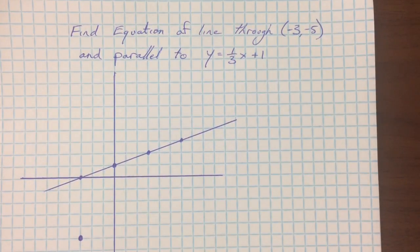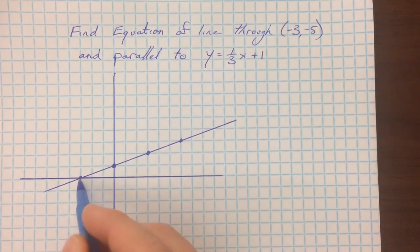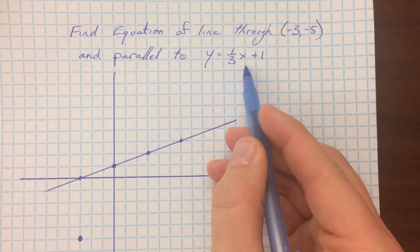For the next one, we want to find the equation of a line that goes through this point, negative 3, negative 5, which I've plotted down here, and is parallel to the line y equals 1/3x plus 1.